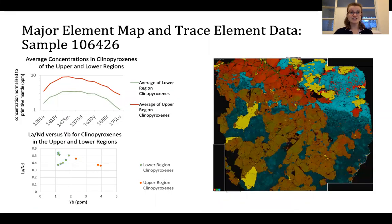To do this, we made qualitative element maps like the one shown here to assess chemical domains within each crystal and identify the areas that could show the greatest heterogeneity across each sample and within crystals.